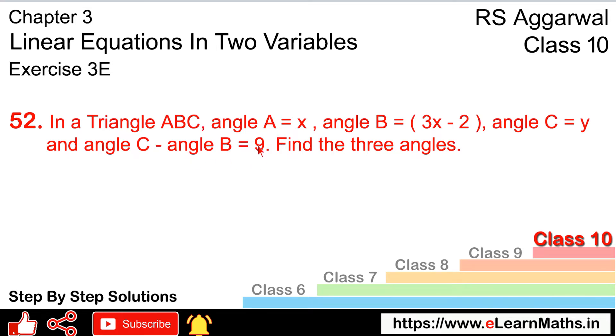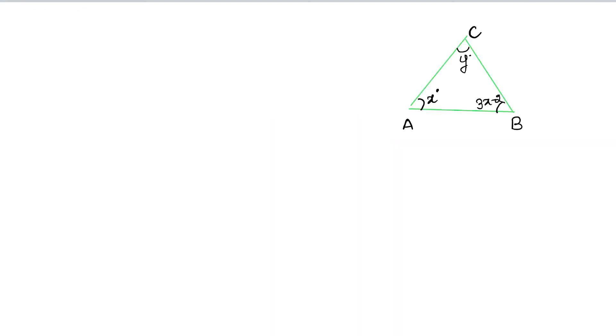Find the three angles. And we have three angles. Angle C, we'll write this equation, right? Angle C minus angle B is given as 9 degrees. So angle C's value is y and angle B is 3x minus 2.